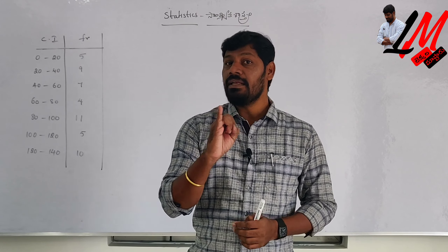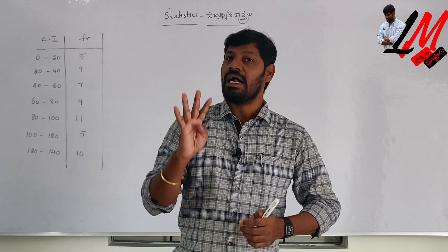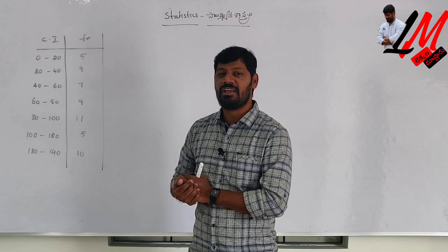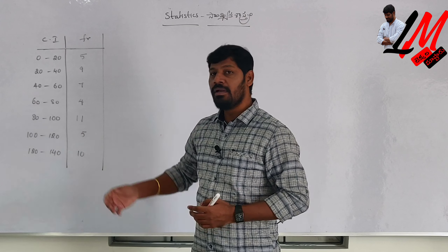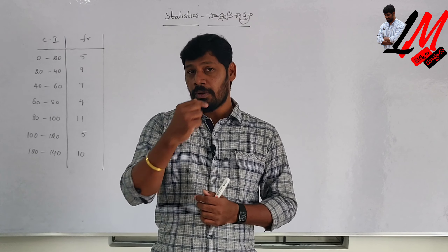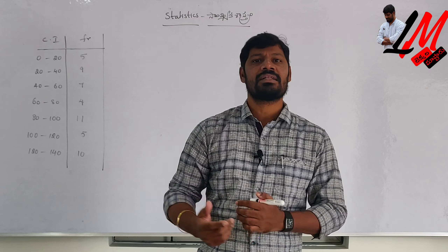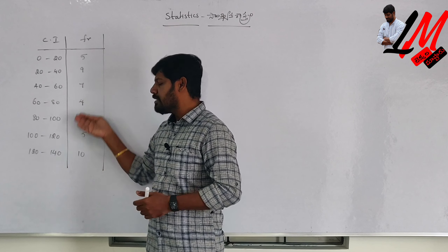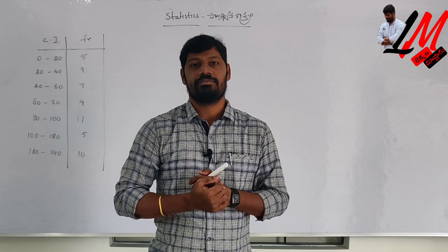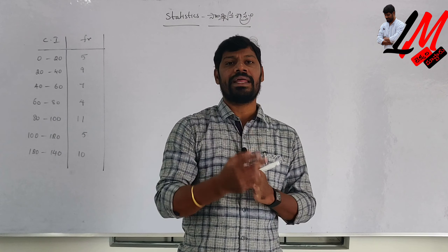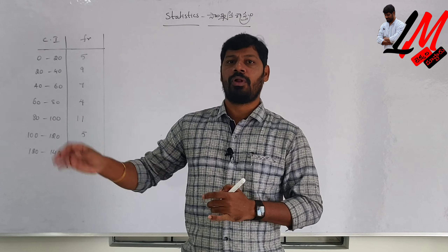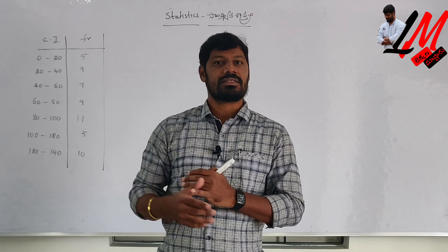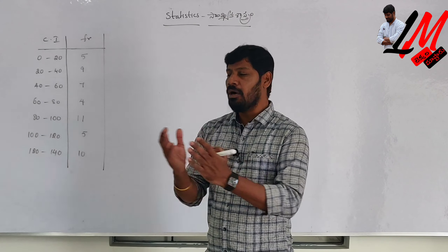In English: mean, median, mode, and graph. All four things we have to do in the table. The table is available, and you can see the books as well. You can practice the class and the numbers. All four things we have to do in the table.